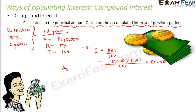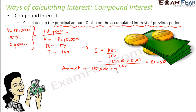So the amount you would get at the end of one year is Rs. 15,000 plus Rs. 750, which is Rs. 15,750.